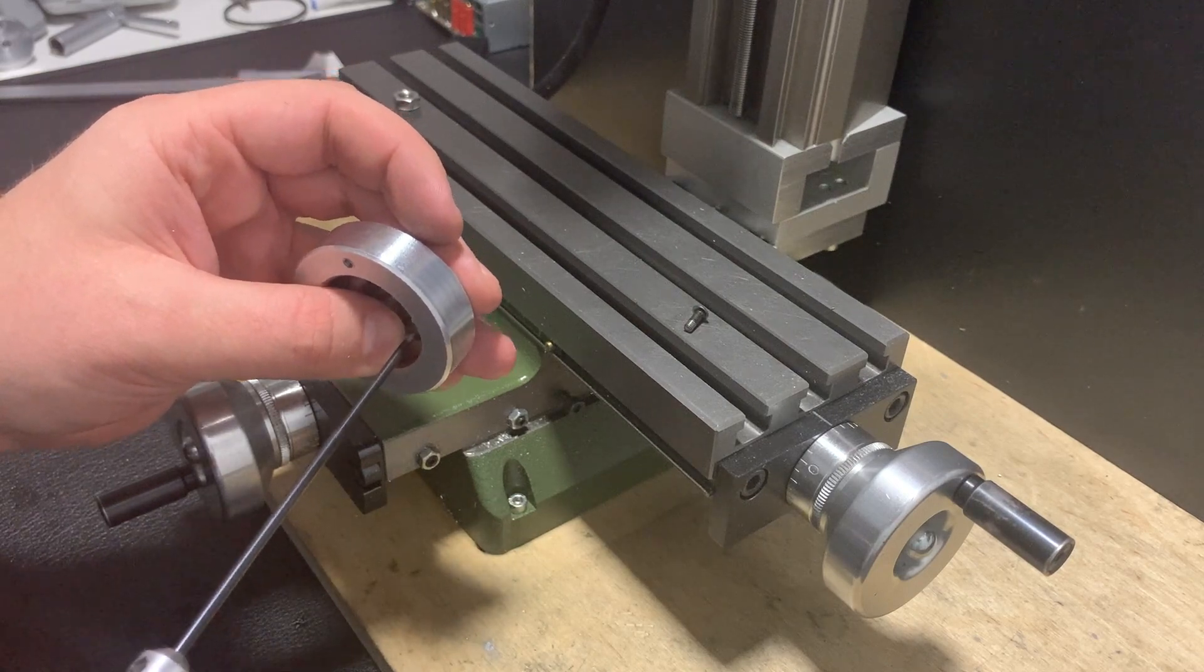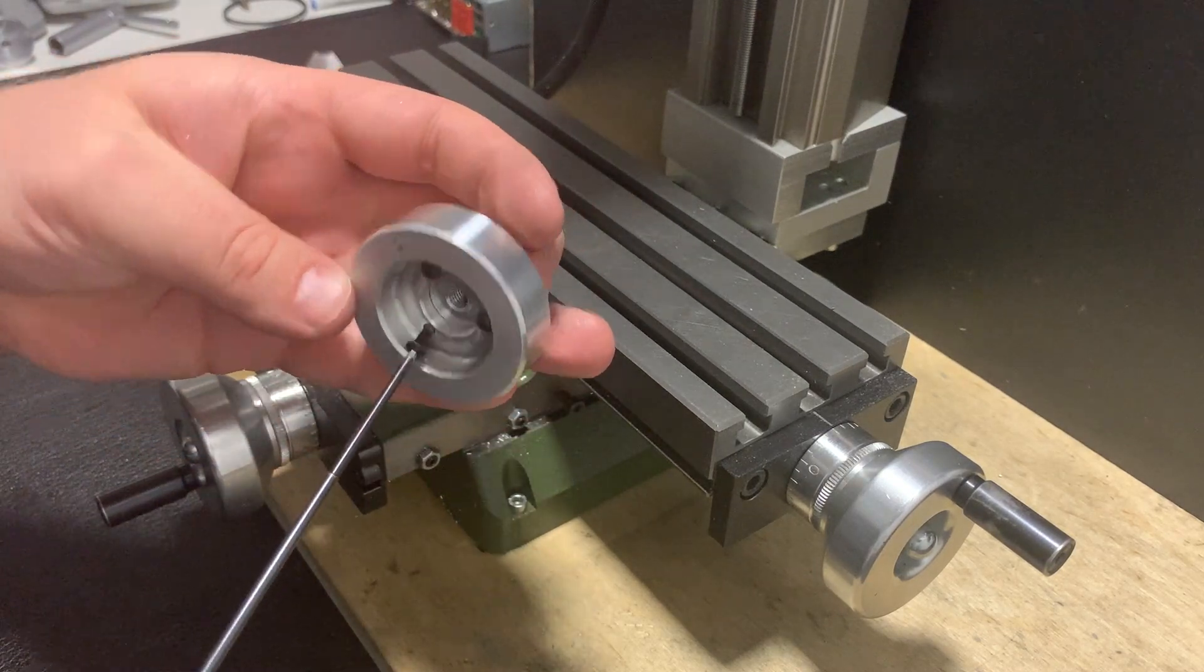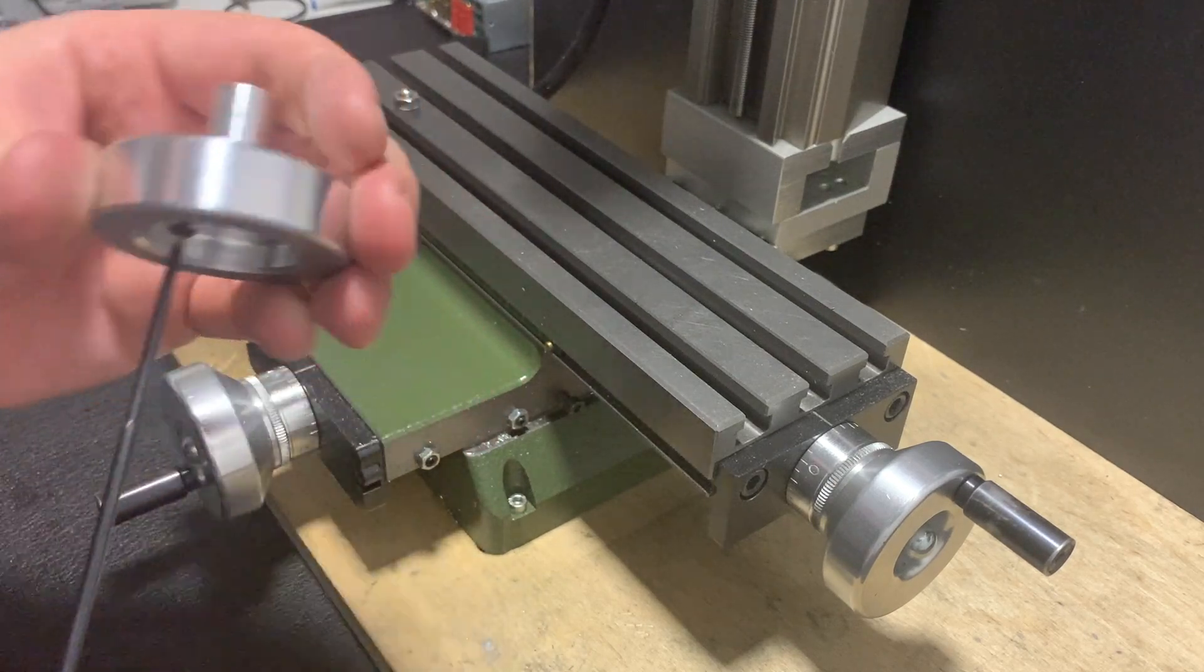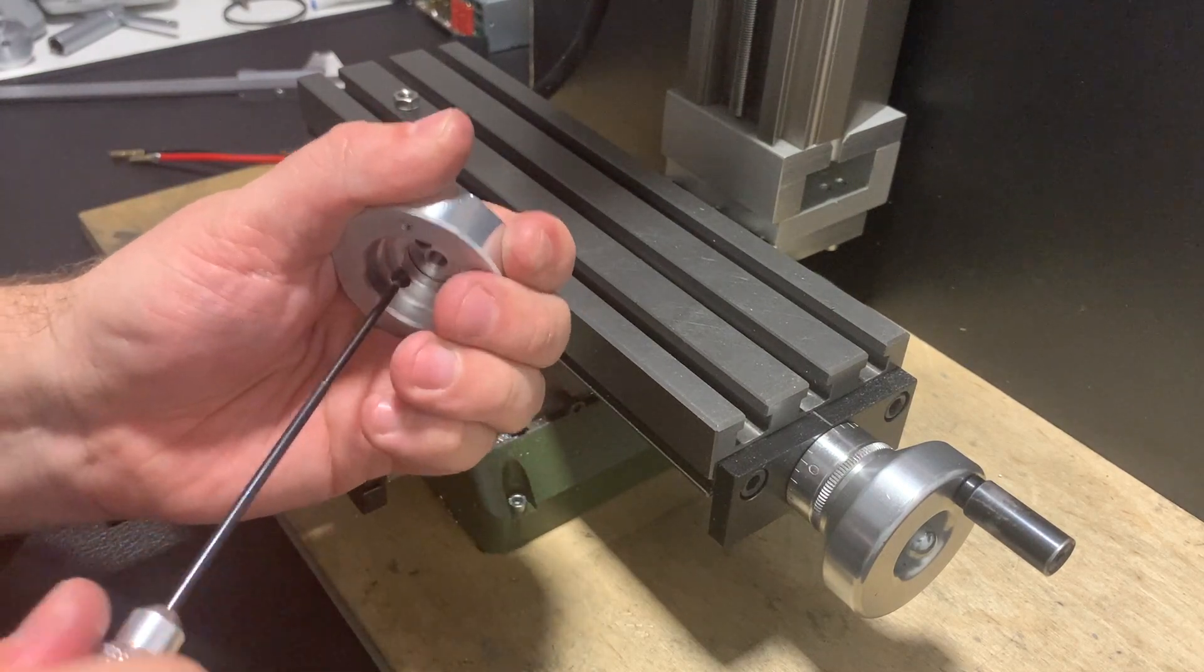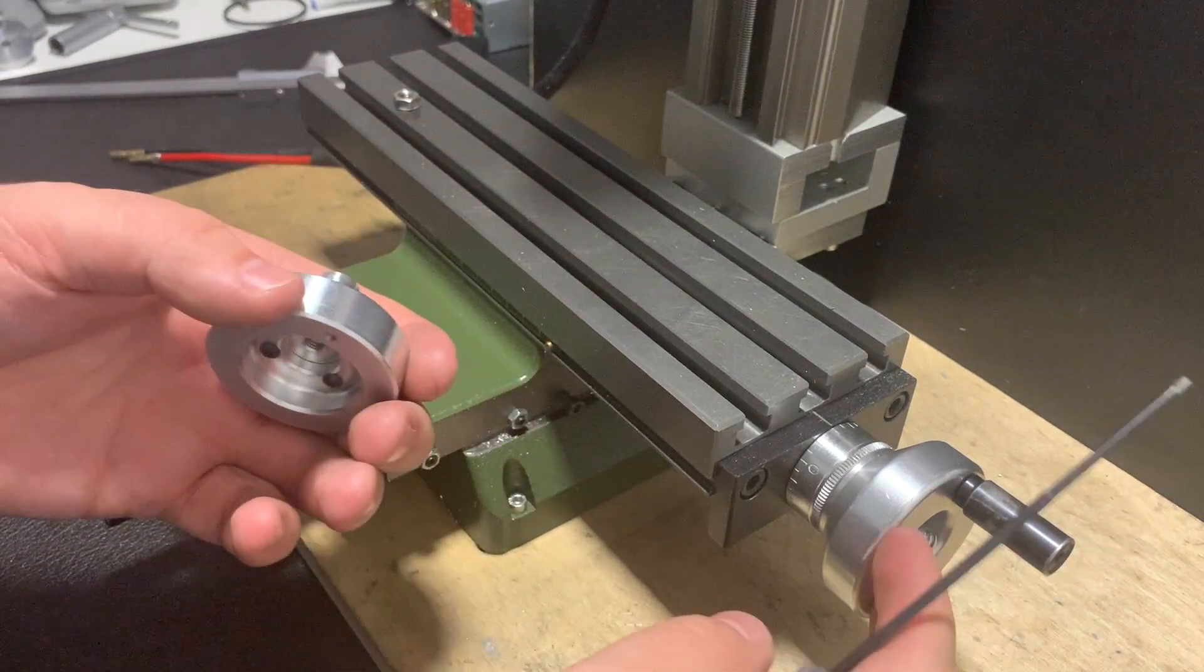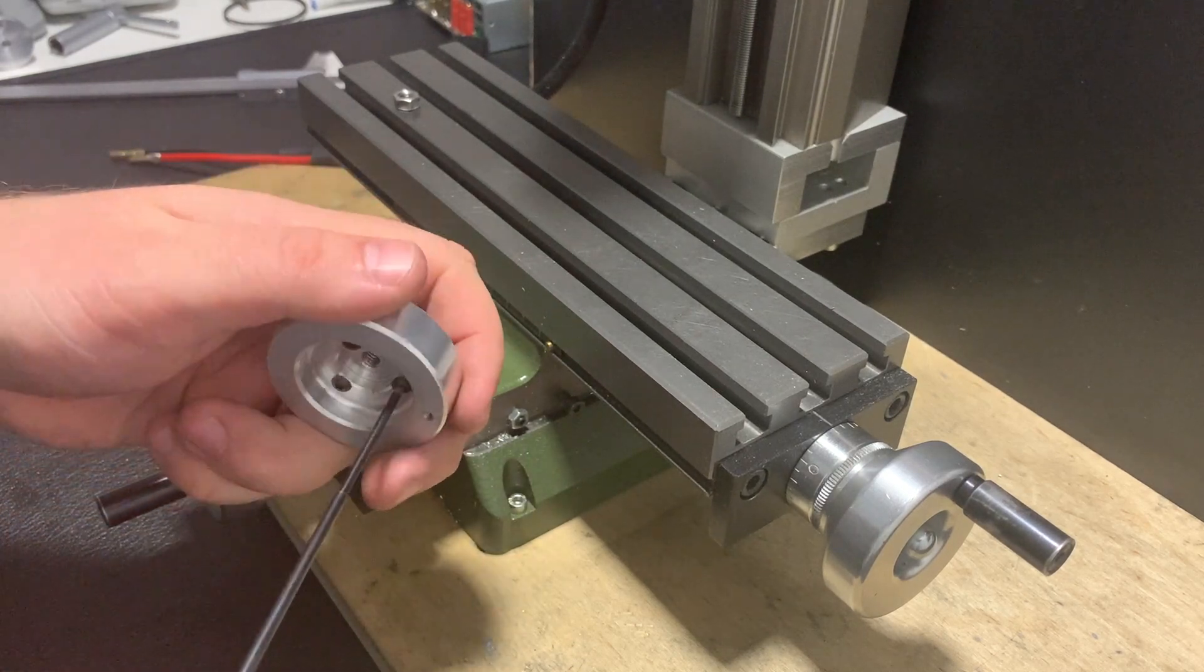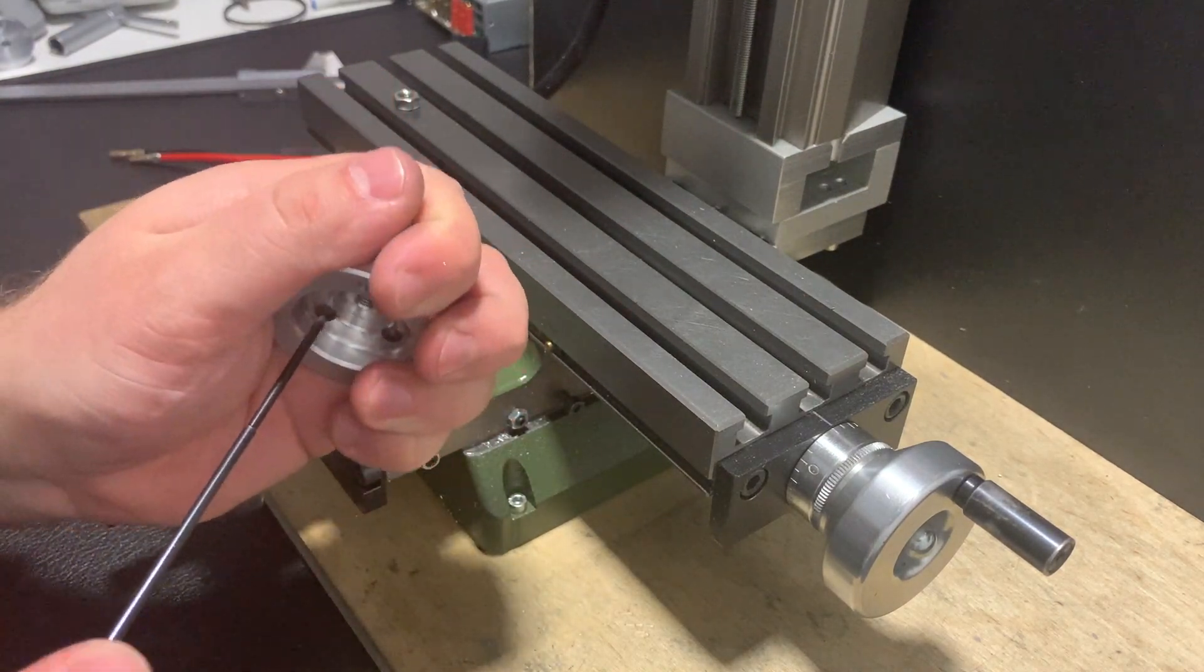Actually original Proxxon handles on the machine, on this one small and on the KT 70 table is pretty small. And it's not very comfortable to use them at all. This one that I have on the bigger Proxxon table, they are much more easy to use. So this one I made almost the same size as I have on the bigger Proxxon table.